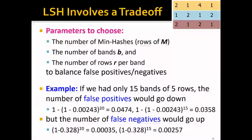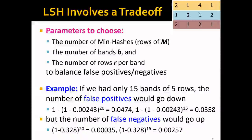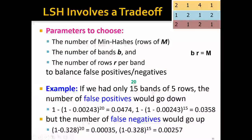You may have noticed that LSH involves a trade-off. We have several parameters to choose: M, which is the number of minhash functions and also the number of rows in matrix M; B, the number of bands; and R, the number of rows per band. We can choose these to balance false positives and false negatives, with the constraint that B times R equals M. For example, if we use 15 bands of 5 rows instead of 20 bands of 5 rows, the false positive rate goes down from 40% to 3%, but the false negative rate goes up from 0.00035 to 0.00257.